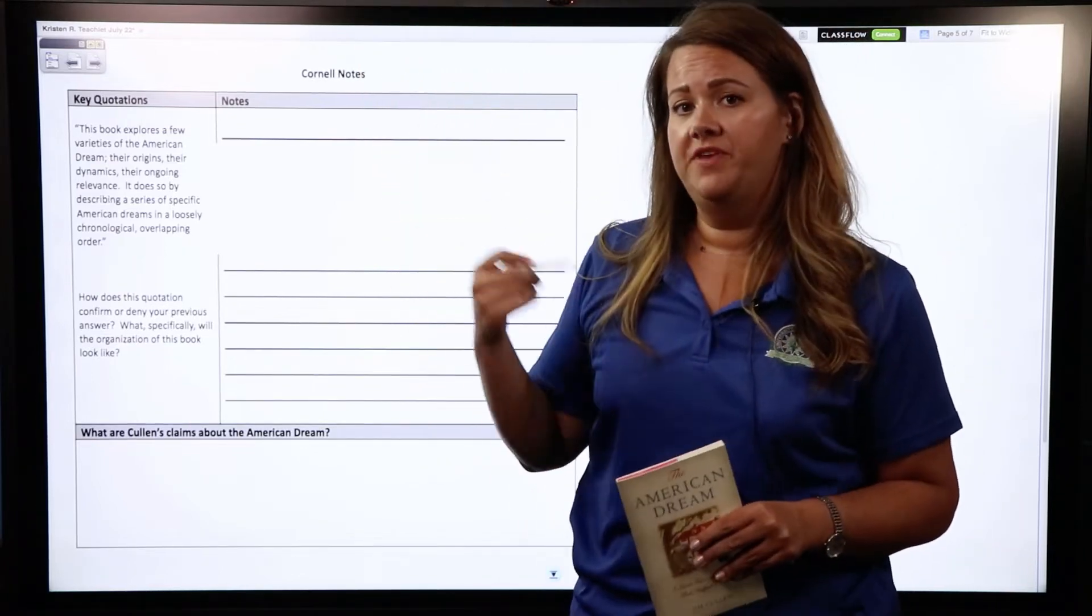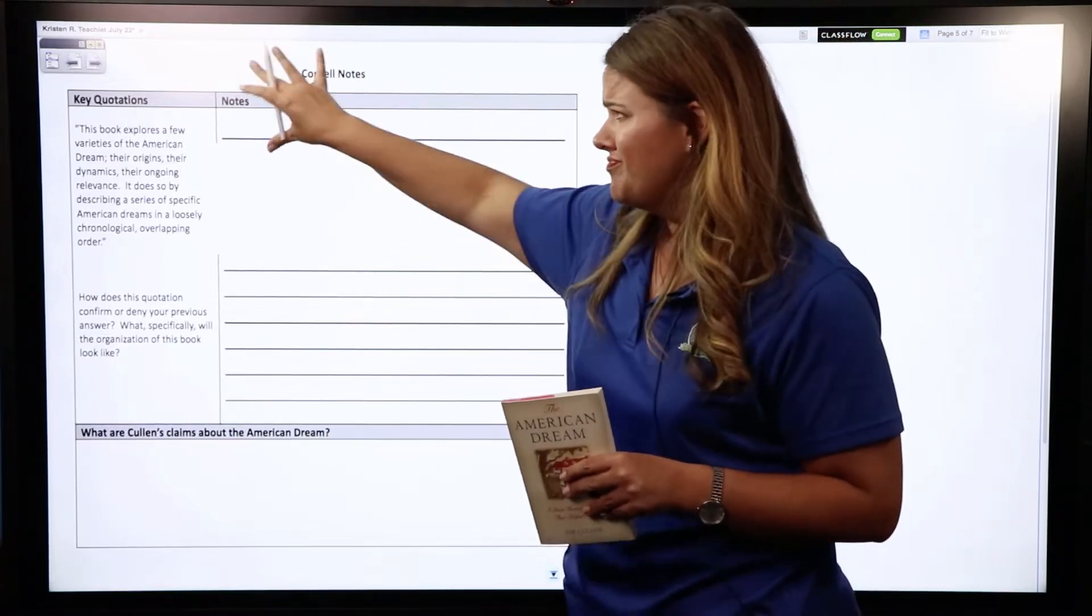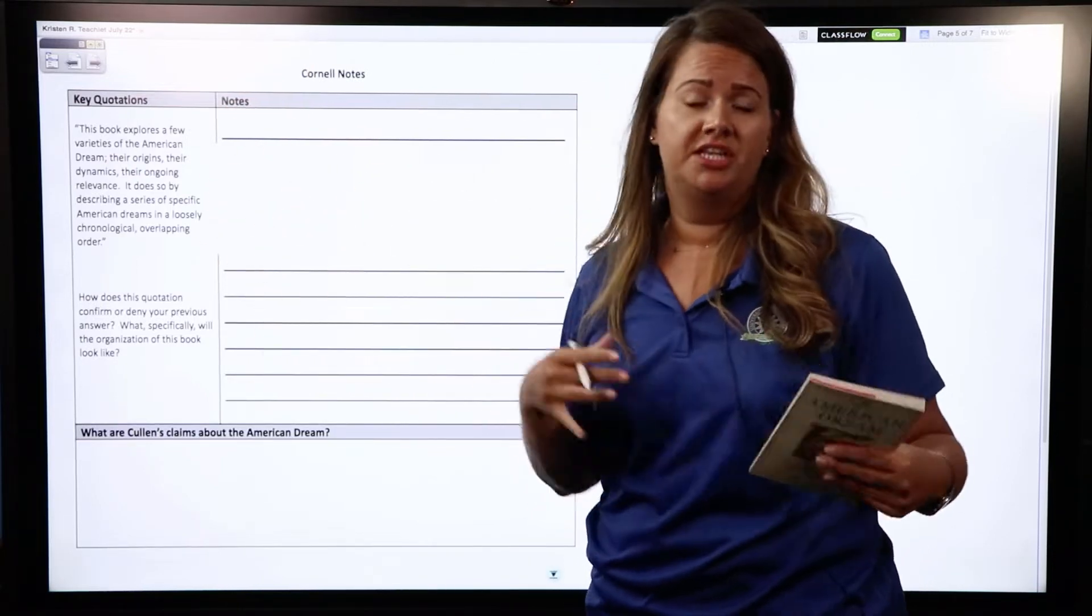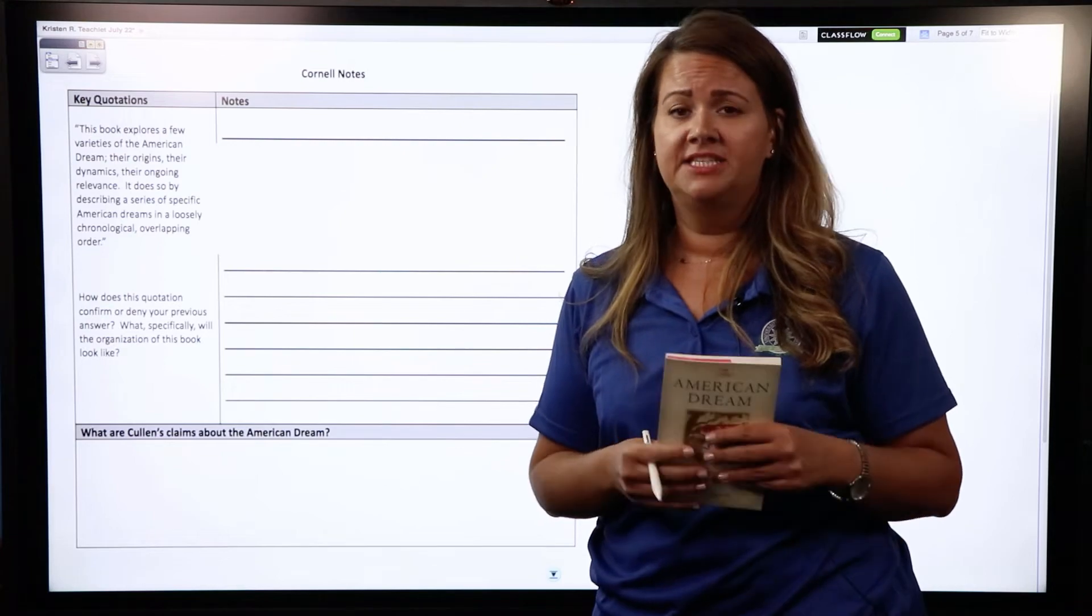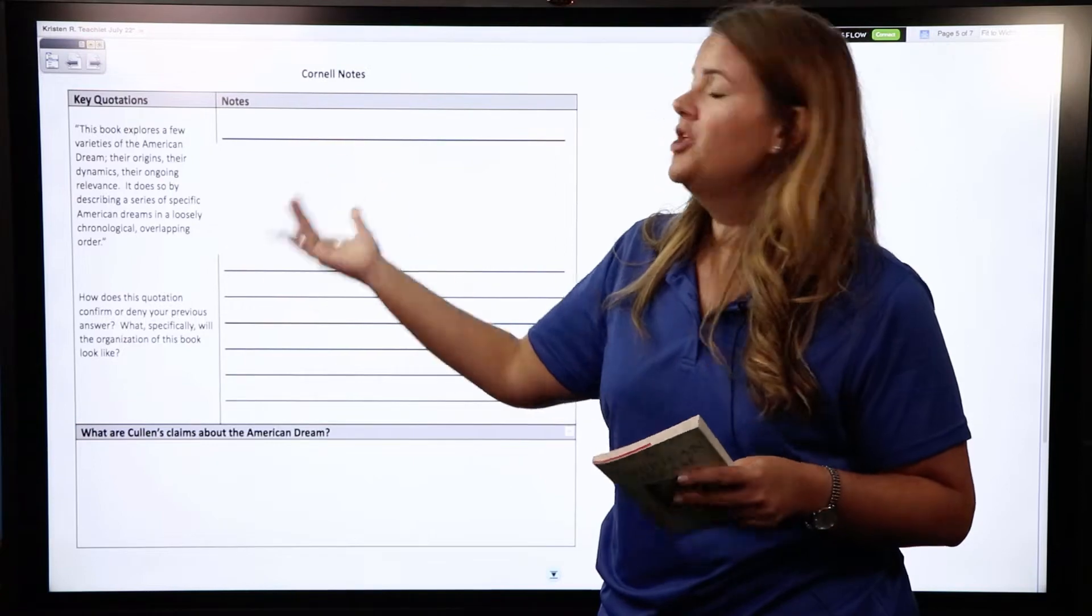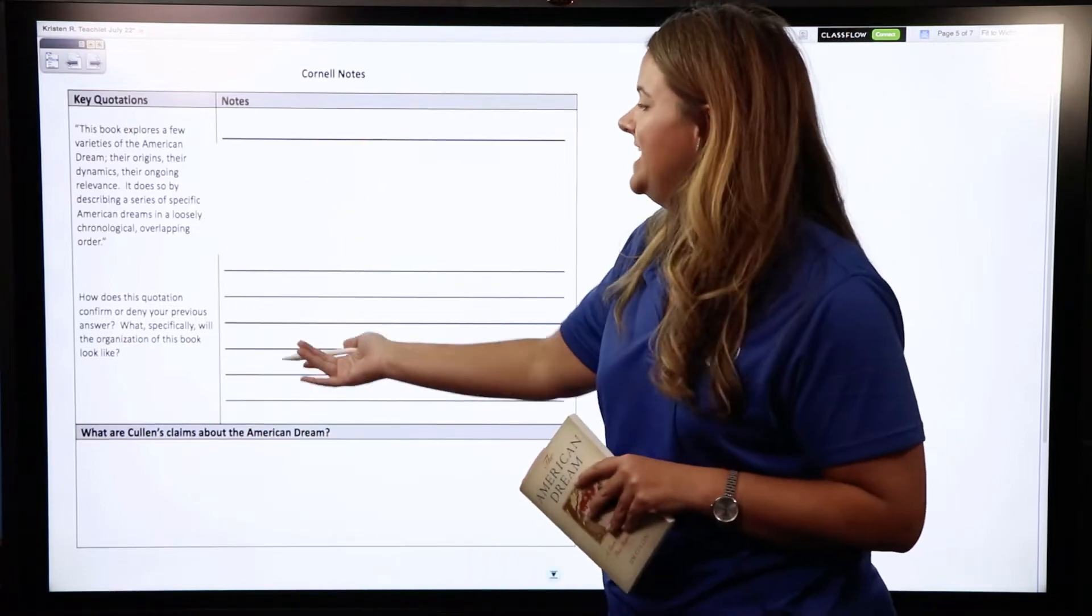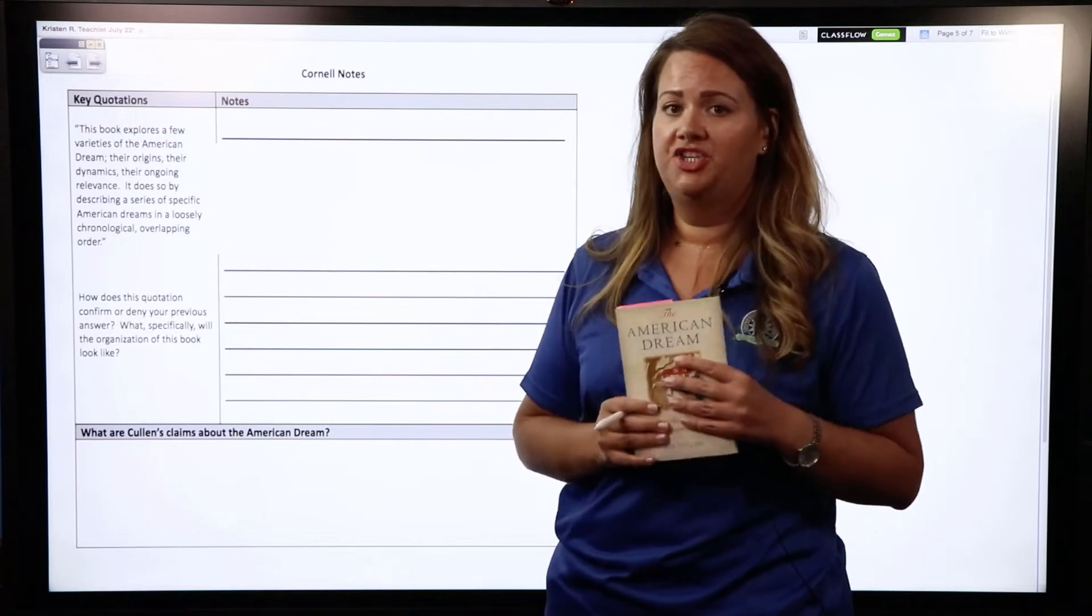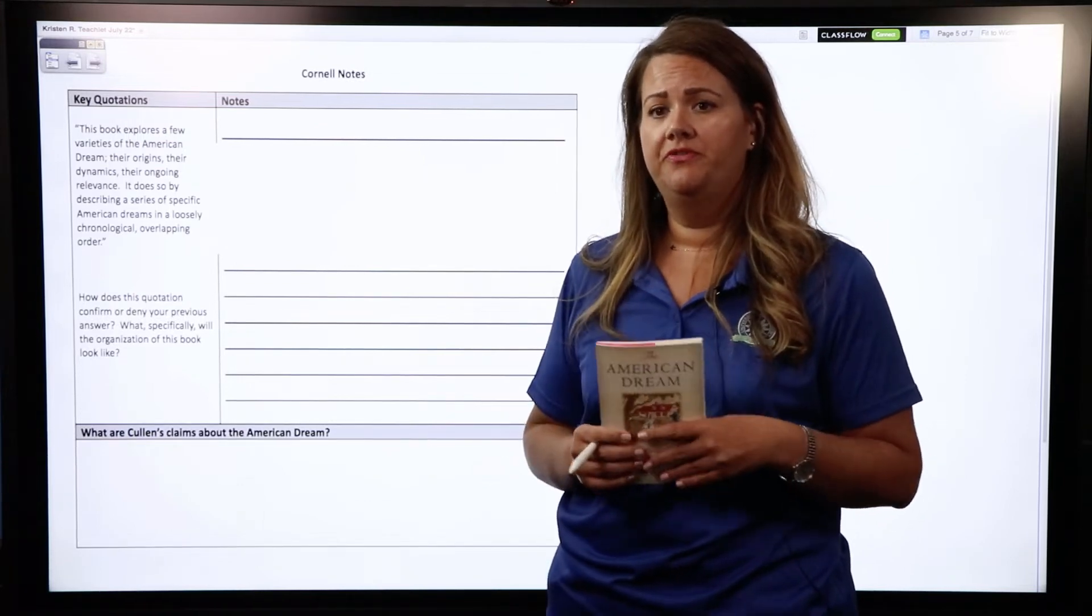Right off the bat we're asked to go back to the previous quote and our previous response and basically make a connection. Have things changed since you analyzed that previous passage or does this quote only serve to confirm what you originally suspected? Then we're going to look at what does it say in here about the organization of this text because we want to be able to infer what can we expect as we go along through this book.